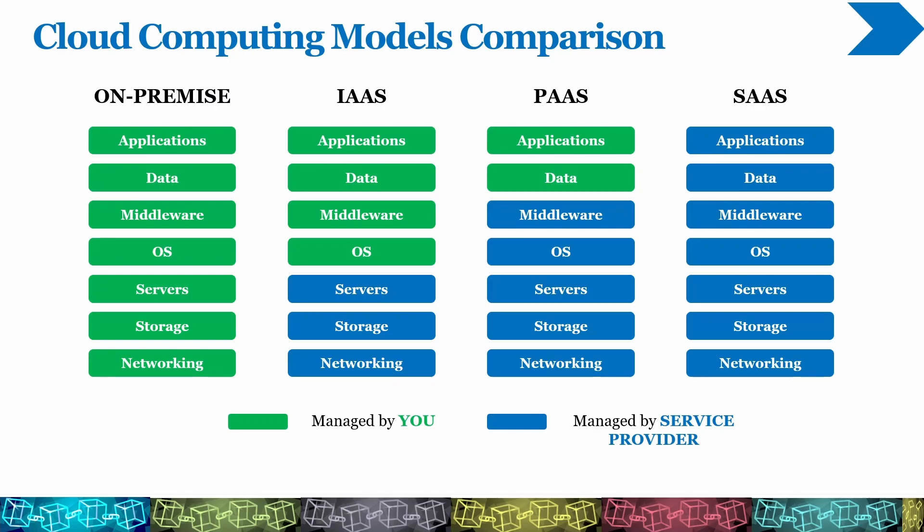In terms of the Infrastructure as a Service model, components like servers, storage, and networking are offered and managed by cloud providers. Other components like applications, data, middleware, and operating systems need to be managed by the company, since the cloud provider will provide only the bare metal server with some basic network connectivity.